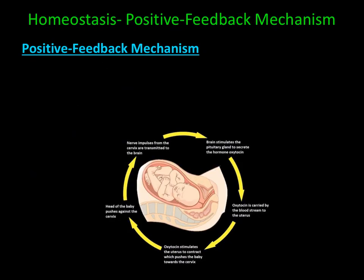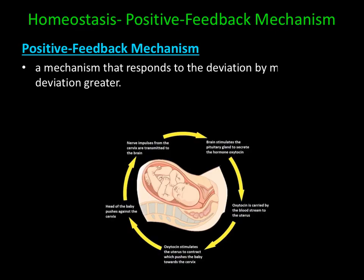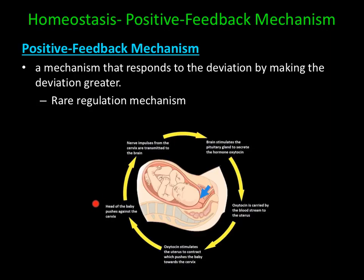The last feedback mechanism that helps maintain homeostasis is positive feedback. A positive feedback mechanism is a mechanism that responds to the deviation by making the deviation greater. Positive feedback mechanisms are rare regulatory mechanisms. Childbirth is an example of a positive feedback mechanism. During childbirth, the head of the baby pushes against the cervix. Nerve impulses from the cervix are transmitted to the brain, which stimulates the pituitary gland to secrete the hormone oxytocin. Oxytocin is carried by the bloodstream to the uterus, where it stimulates the uterus to contract, pushing the baby towards the cervix.